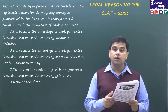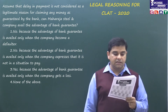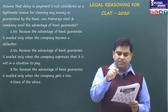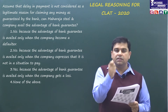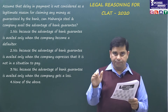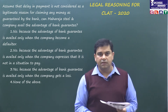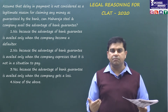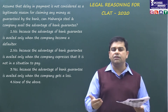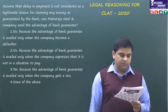Question 3: assume that delay in payment is not considered a legitimate reason for claiming money as guaranteed by the bank. Can Maharaja Steel and Company still avail the advantage of bank guarantee? This is a twist — if delay alone is not enough to execute the bank guarantee, you need a different reason. For example, if someone says they absolutely won't pay you, that becomes a legitimate reason. A small delay is common in business since money is in rotation; you charge interest for short delays. But if the delay is indeterminate, you execute the bank guarantee.